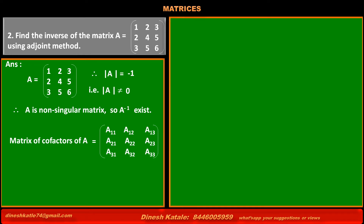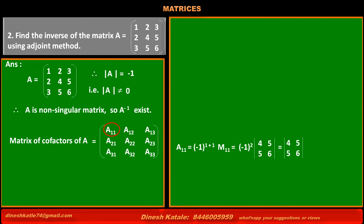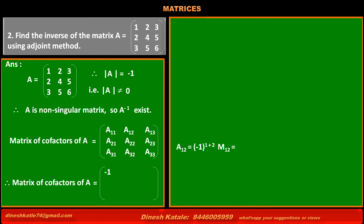Now we have to find the matrix of cofactors of A. The cofactor of the element at first row, first column is A11 = (-1)^(1+1) × minor M11 = (-1)^2 × (4×6 - 5×5) = 1 × (24 - 25) = -1. Thus the cofactor of the element at first row, first column is -1.